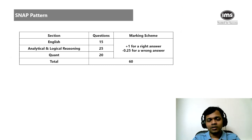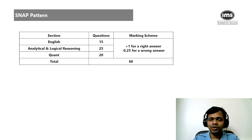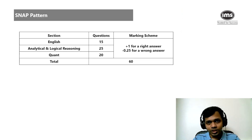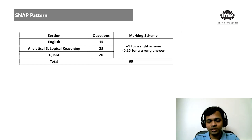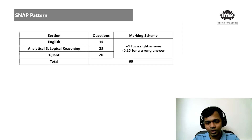This particular paper pattern was a deviation from what SNAP has traditionally followed. This was the pattern from 2020. Prior to that, if you look at SNAP 2018 or SNAP 2019, the pattern and difficulty were very different. What changed in 2020 is that they reduced the duration, reduced the number of questions, and made it a completely speed-based exam — 60 minutes, 60 questions. You have to be very fast to attempt more questions.